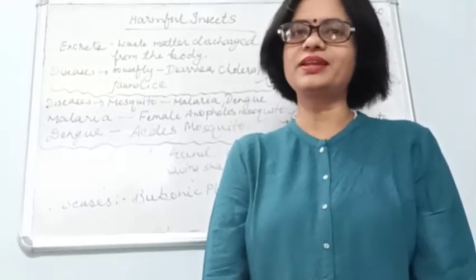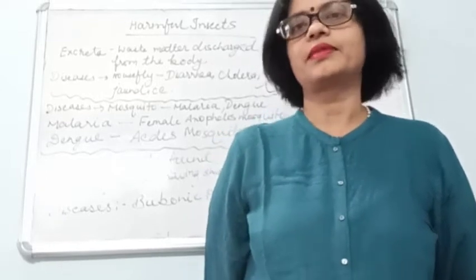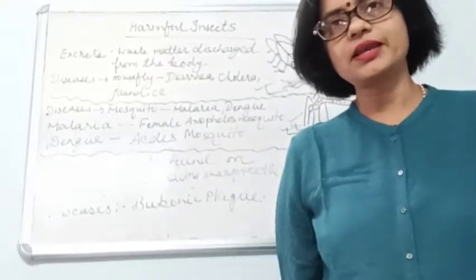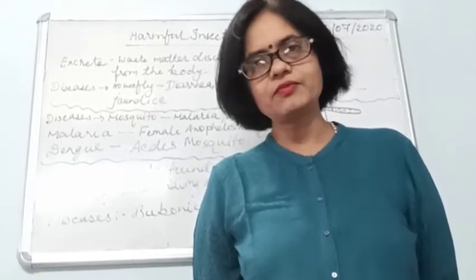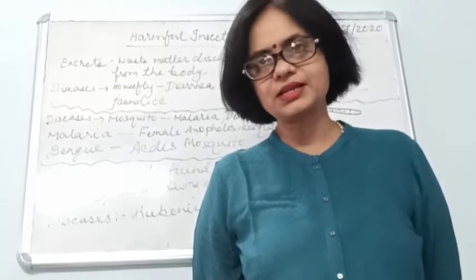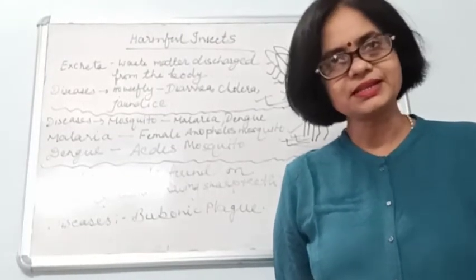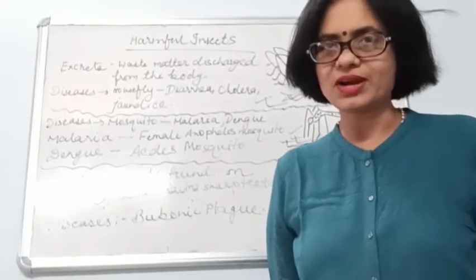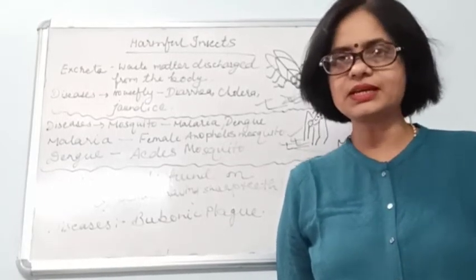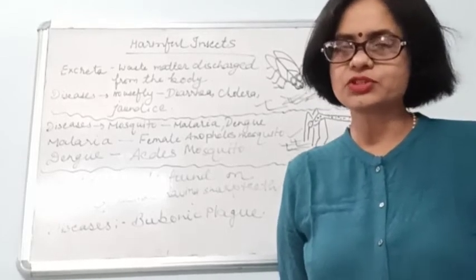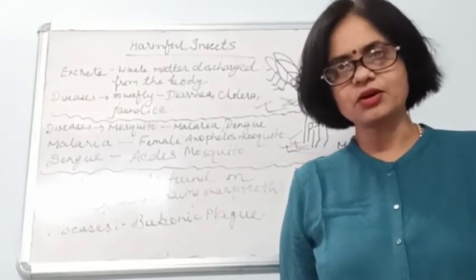In our previous class we have already learned about the useful insects. We learned about the honeybee and their combs, how honey goes to their beehives, and nectar. Then we learned about the silkworm that provides silk thread to us, and we also know about the cocoons. Then the lac insect, which provides us lac that is useful for varnishes and paints. Then the ladybird, which is a very useful insect because it eats the pests that grow in the farms and damage the crops.